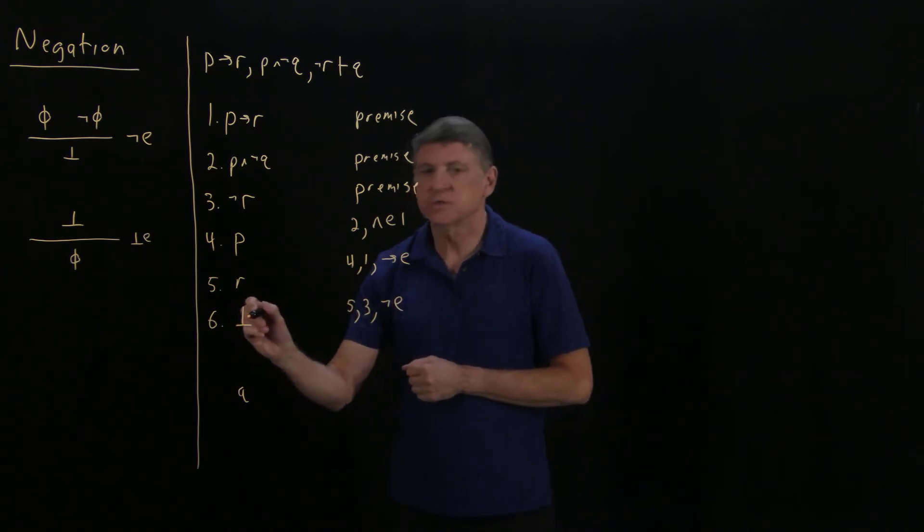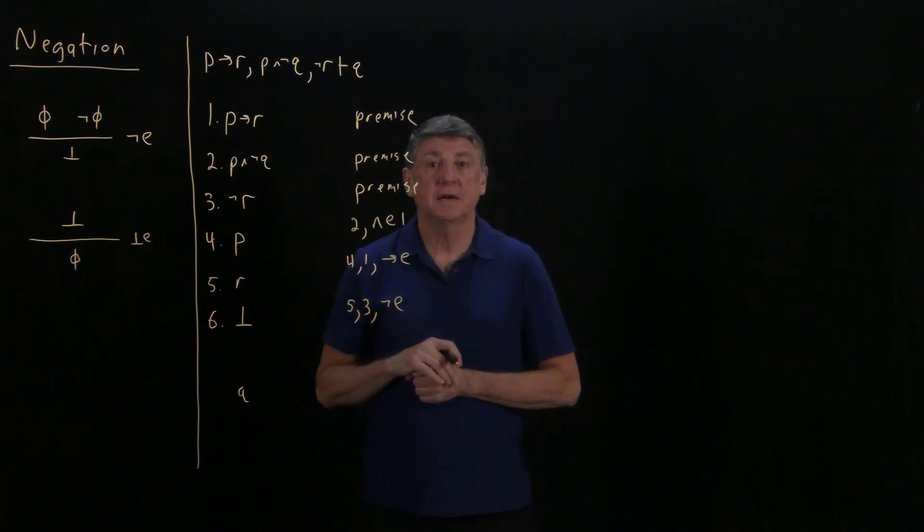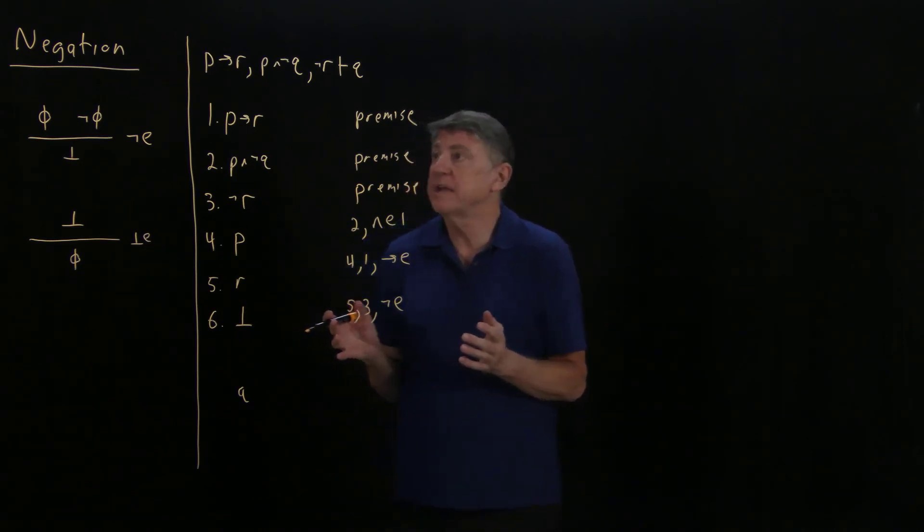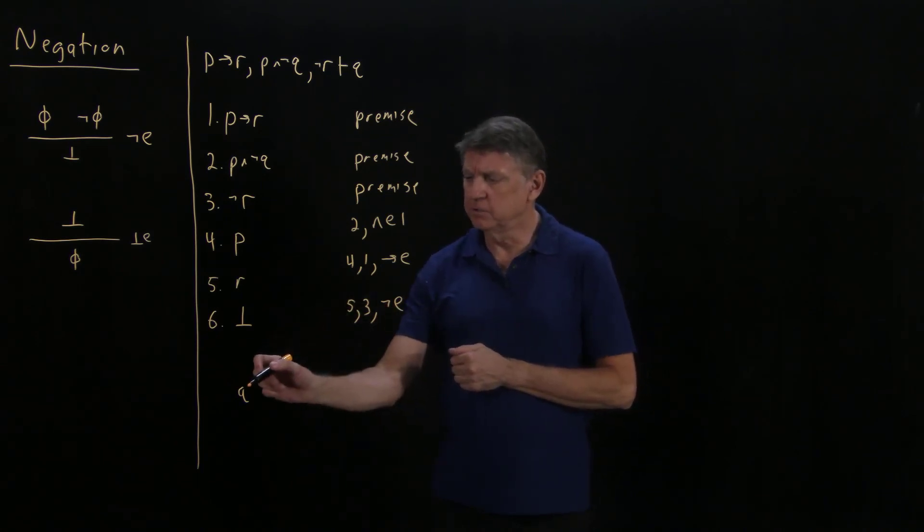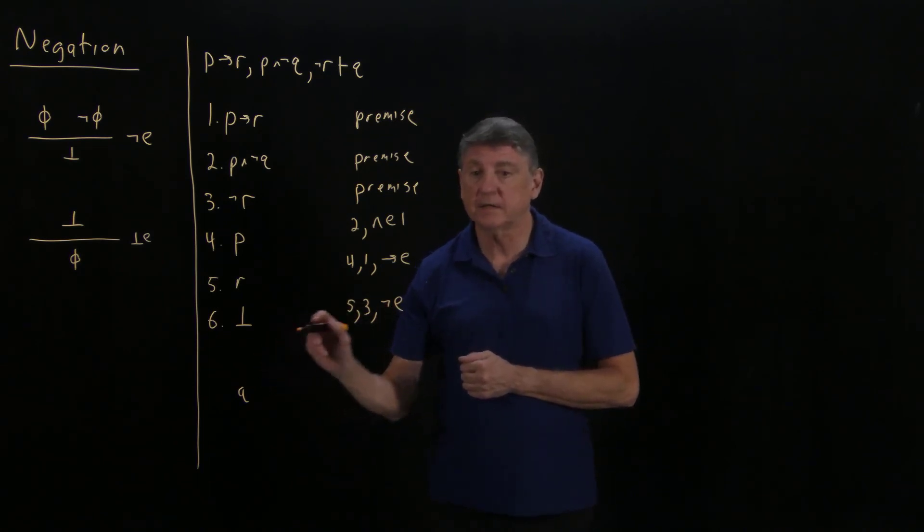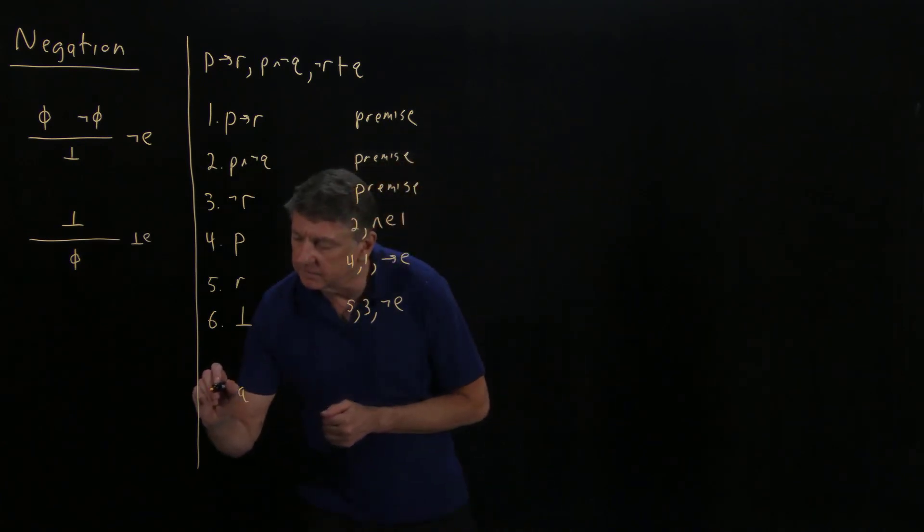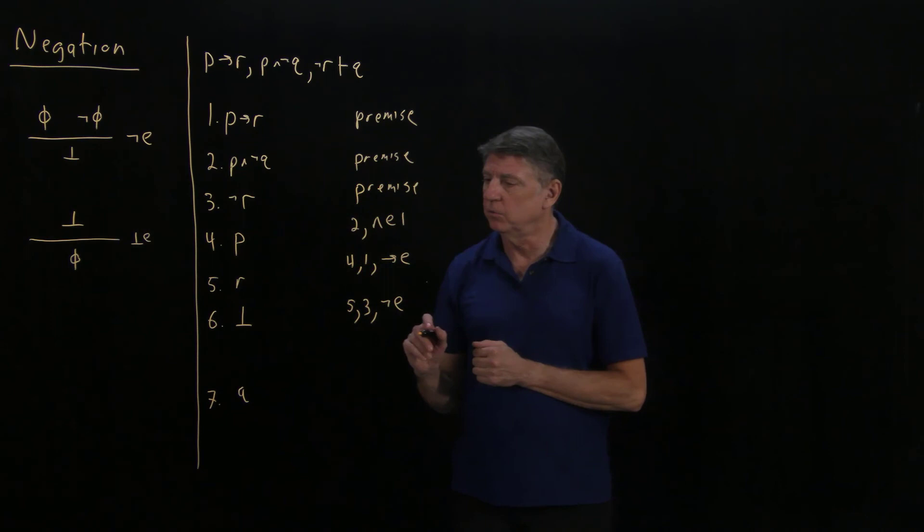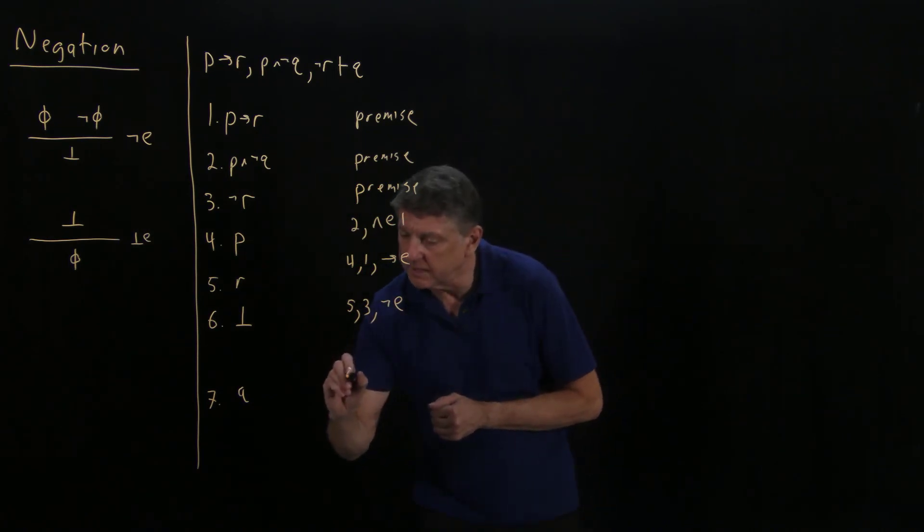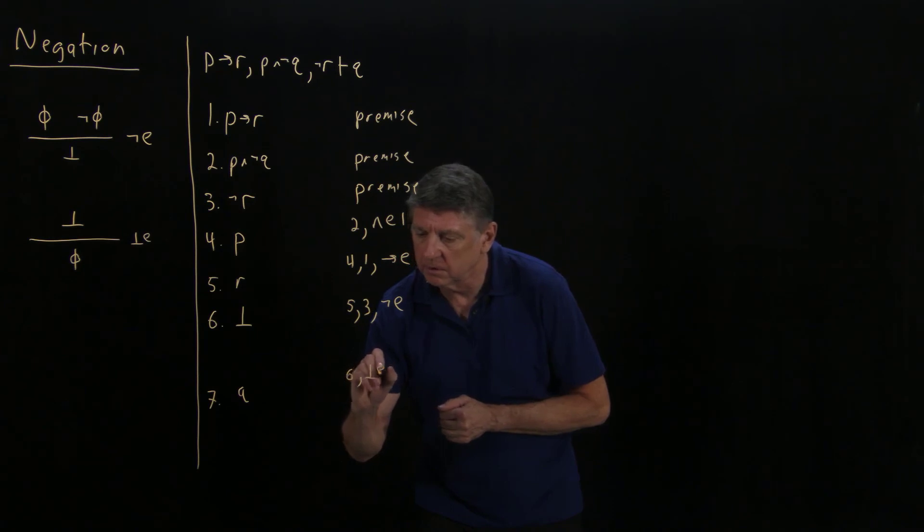Once I have the bottom symbol, I can conclude anything I want. I could conclude, for example, P and R. That's not so useful. The place that's useful is I can now jump directly to the conclusion of this proof, and I can say I arrived at Q by using line six and bottom elimination.